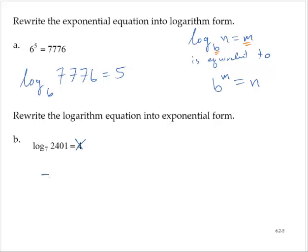I would ask myself, 7 to what power is 2,401? In this case, that power is already given to us, and it's 4. So 7 to the fourth power is 2,401.